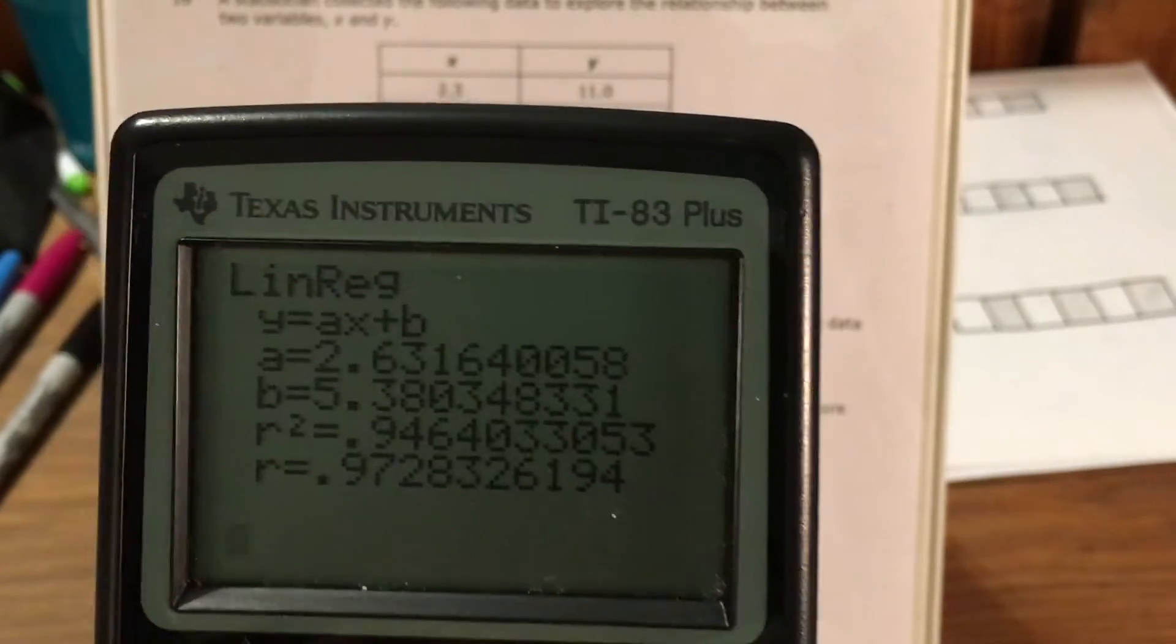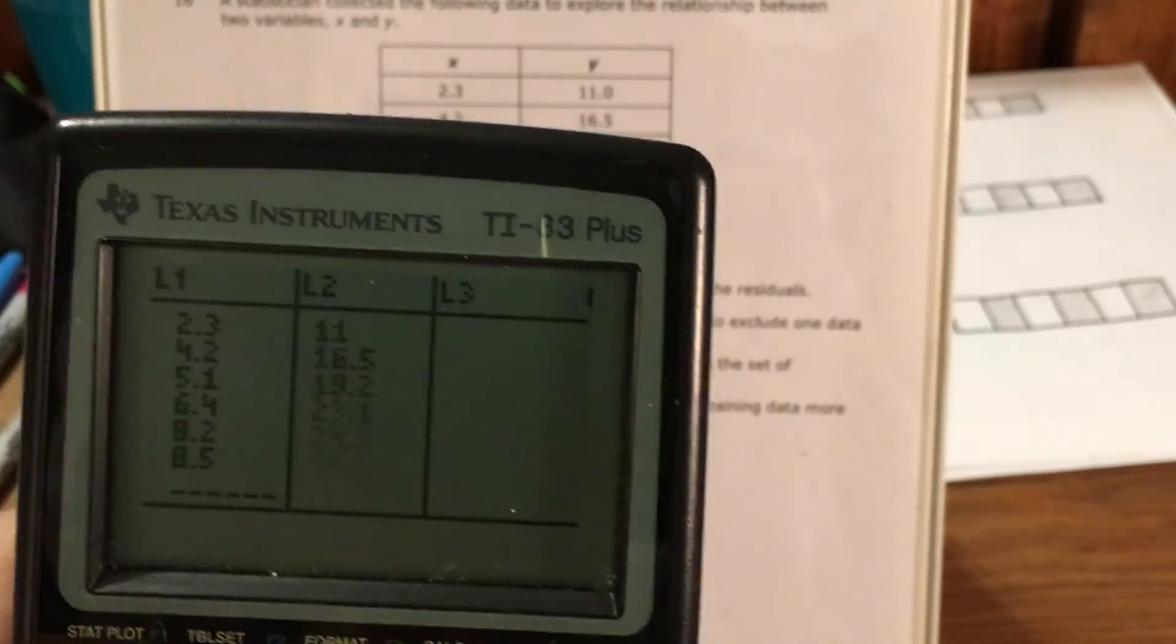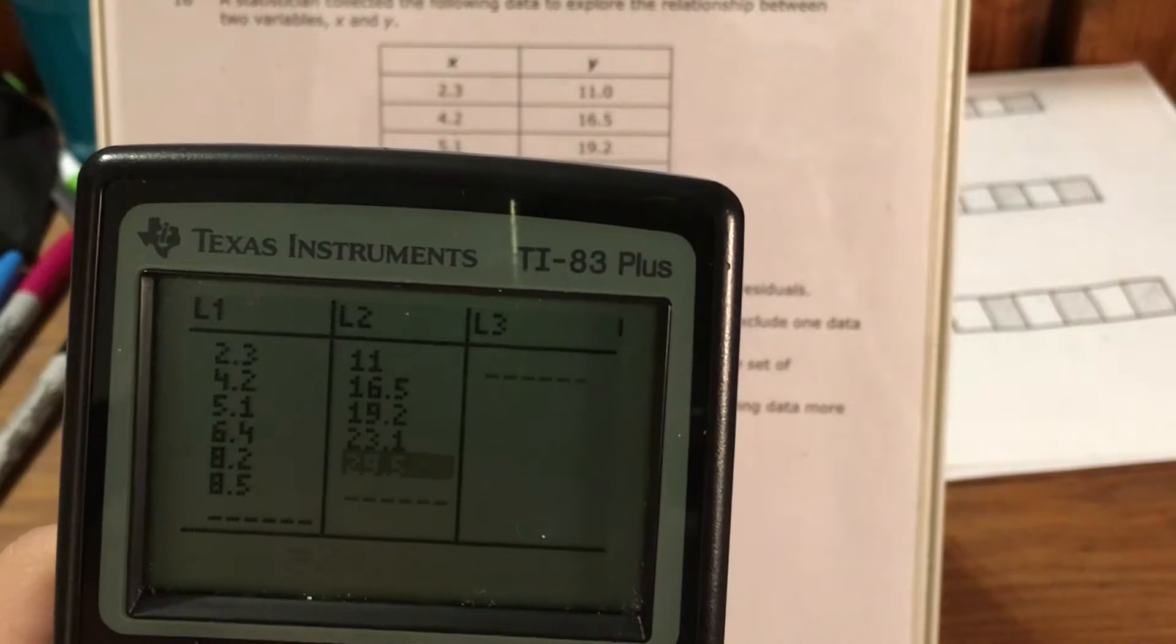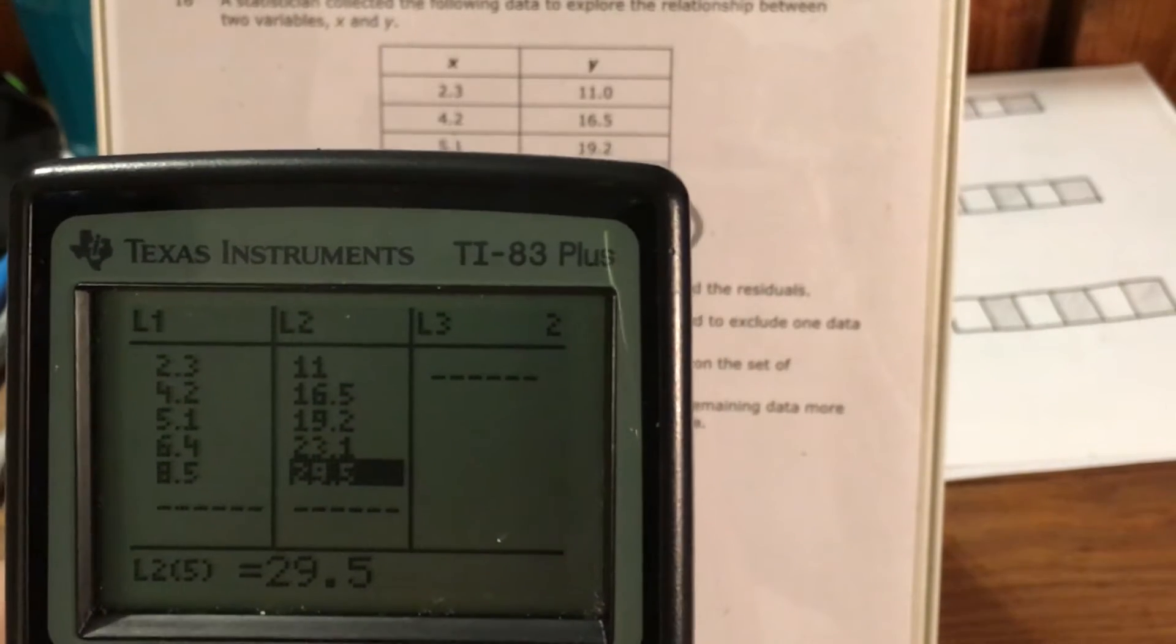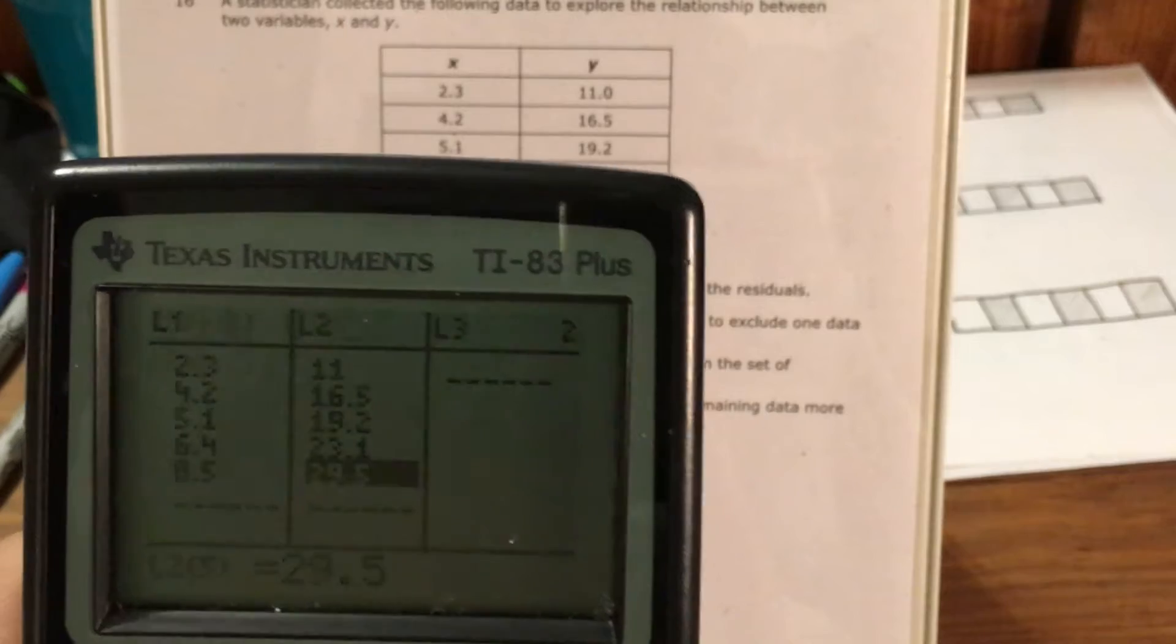But we are still testing to see if taking out the 8.2 and 24.3 point would make it stronger. So I take that out.